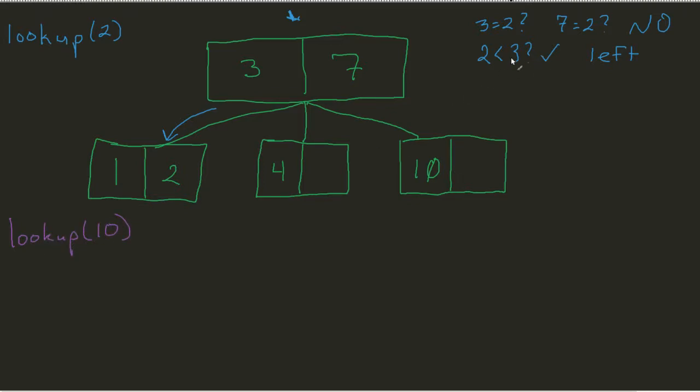The same principles are going to come into play. I ask, first, is 10 equal to 3? No. Is 10 equal to 7? No. Same question. Is 10 less than 3? No. So I don't go to the left, but I don't immediately go to the right either. I have to make another check.